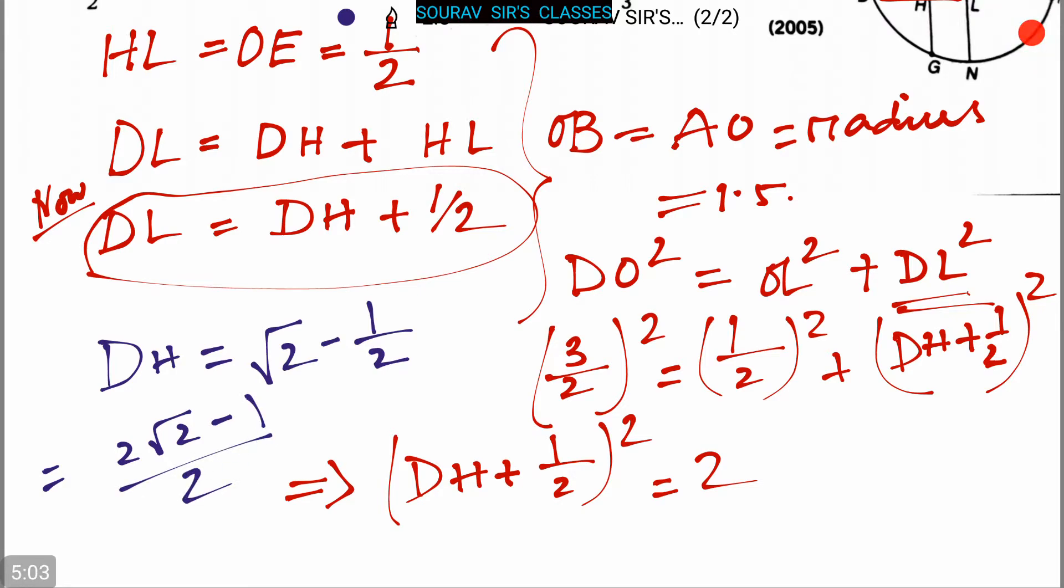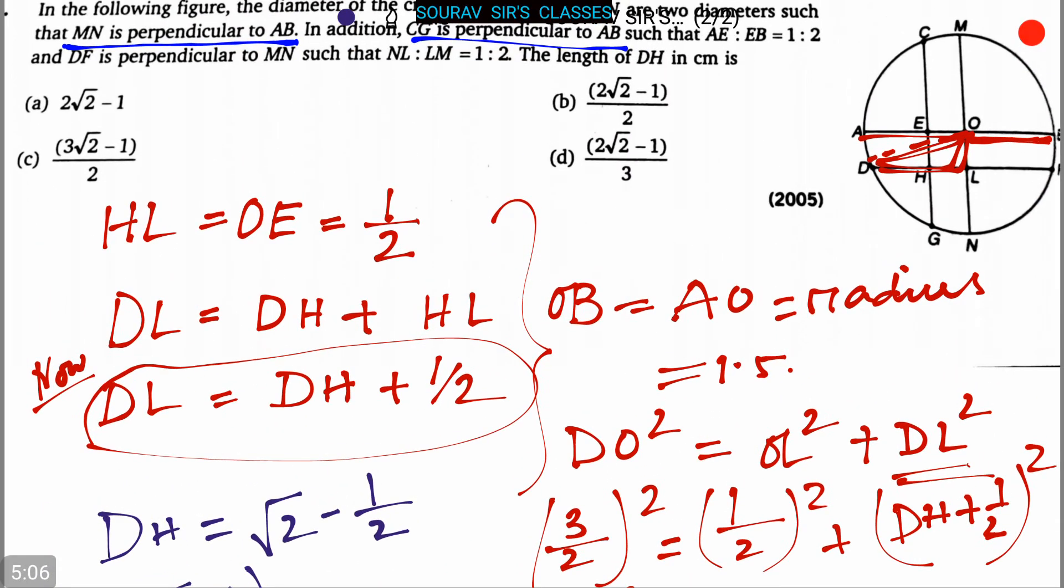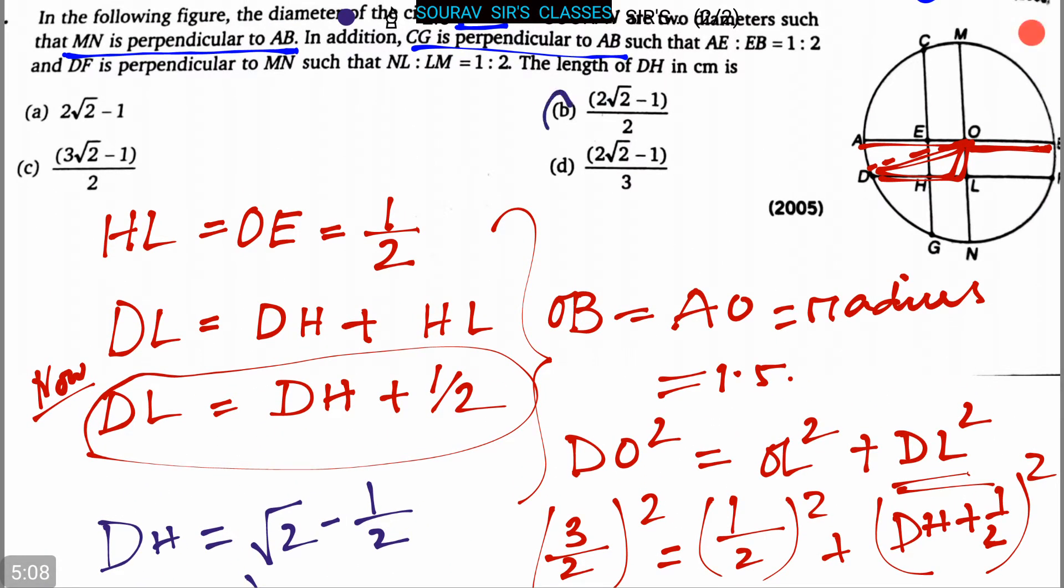So here, option B that is 2 root 2 minus 1 divided by 2 is the correct answer. So the length of DH in cm is 2 root 2 minus 1 by 2 cm. And this is our answer.